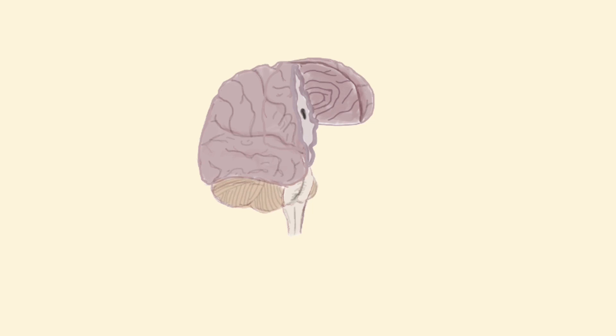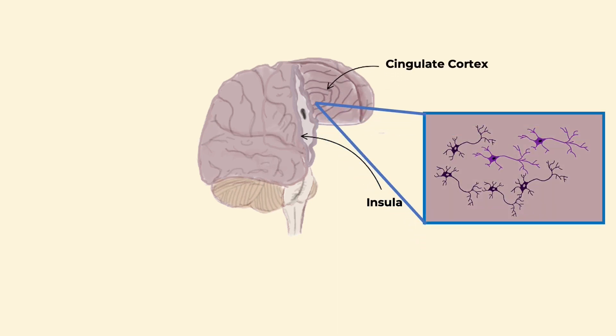The interneurons that we are interested in are found in the anterior cingulate cortex and the right insula. The right side of the brain, and the insula especially, are known to help identify self.